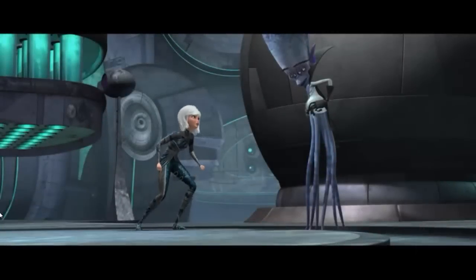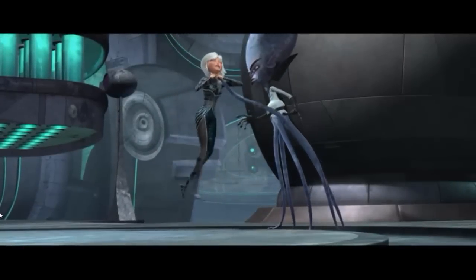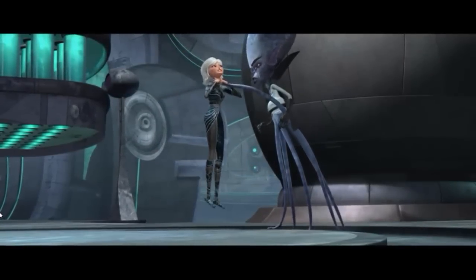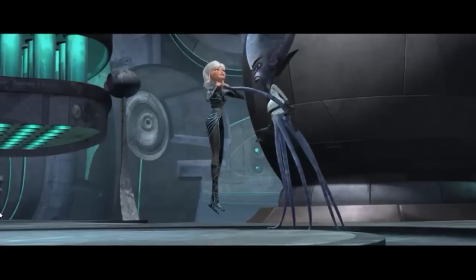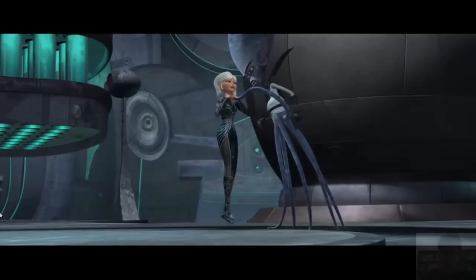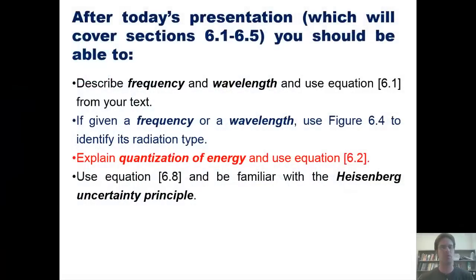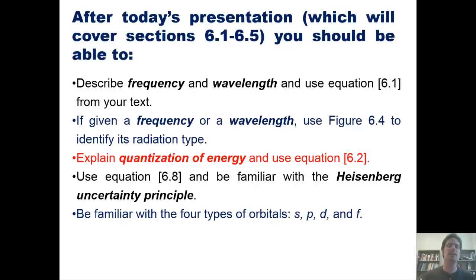You keep your slimy tentacles off my planet. If you wanted to stop me, you should have done it when you possessed the quantonium. Now you're nothing. Use equation 6.8 and be familiar with the Heisenberg Uncertainty Principle. Be familiar with four types of orbitals, S, P, D, and F, and note that we'll skip section 6.3.